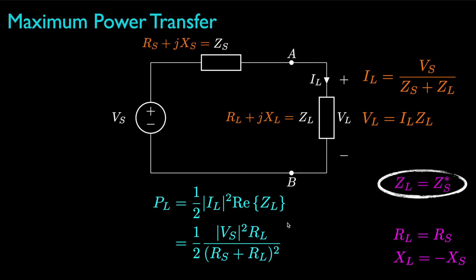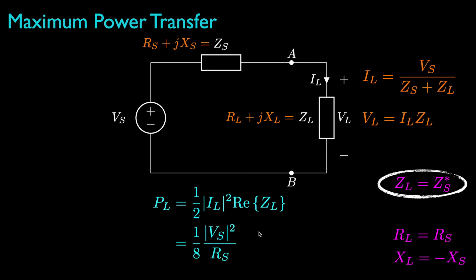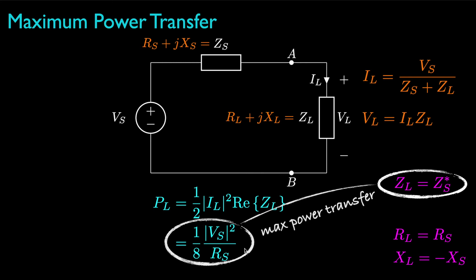This means we want to set the load impedance to the complex conjugate of the source impedance. When we do that, the load power simplifies to the squared magnitude of the source voltage divided by eight times the source resistance. These are the expressions for the load that maximizes power transfer and the average power that load will receive.